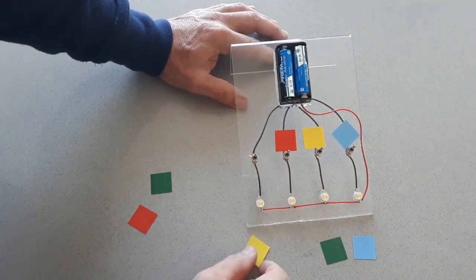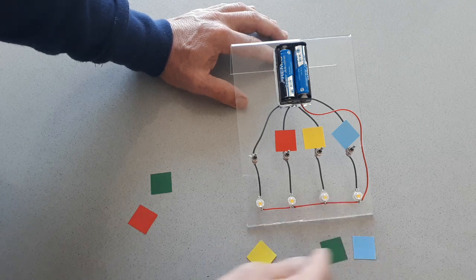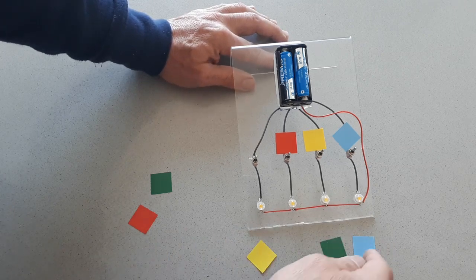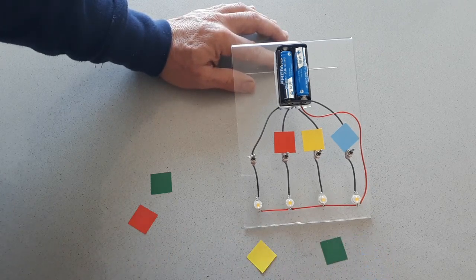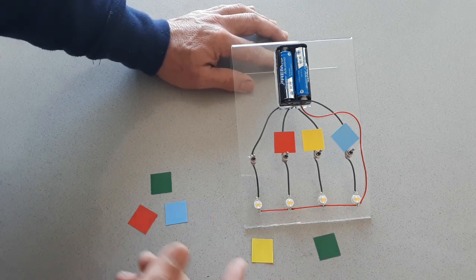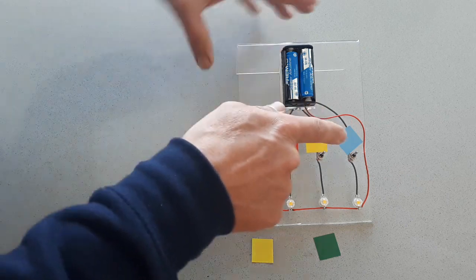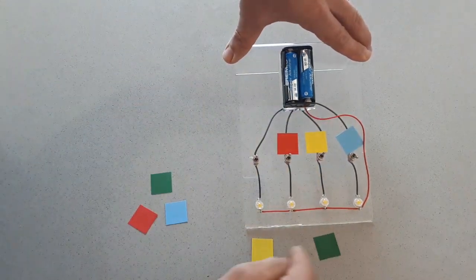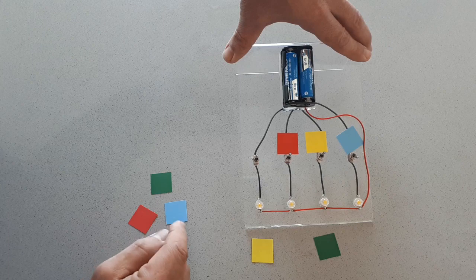So again, what would happen if I remove any of these colors? For example, if I remove now the blue LED. Well, in this case, if I switch on the blue one, nothing will happen because the blue now is here.